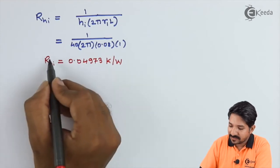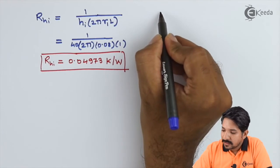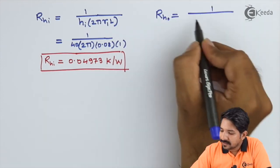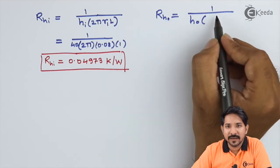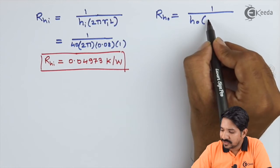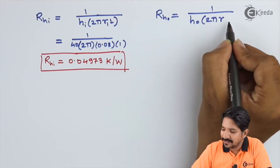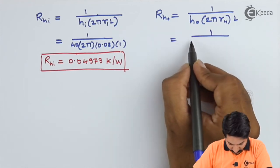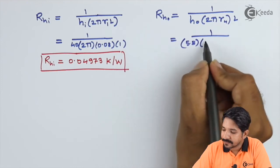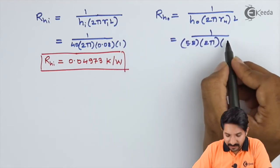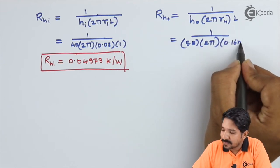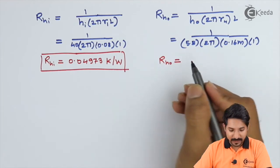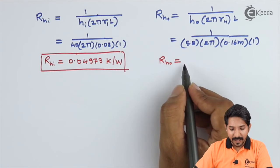Next, finding RHO — the thermal resistance offered by the ambient air. The formula is 1 / (HO × Area), where Area = 2π·r4·L. Substituting: HO = 5.8, r4 = 0.165 m, L = 1 m. Therefore RHO = 1 / (5.8 × 2π × 0.165 × 1) = 0.1663 K/W.